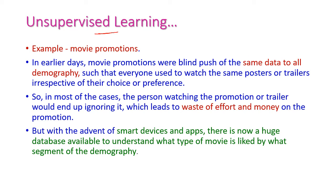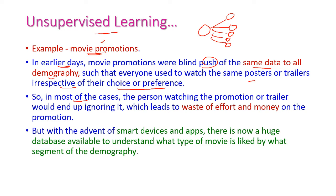Let us try to understand more about unsupervised learning with one example — the movie promotion example. In earlier days, the same promotion was posted to all groups of people, so everyone had to watch the same poster or trailer irrespective of their choice or preferences. In most cases, the person watching the promotion would end up ignoring it, and some people would get irritated — wasting money and effort. But by using smart applications, we can identify which people like the movie and promote it only to those particular people, so the reachability will be very high. For this purpose, we can use unsupervised learning algorithms.